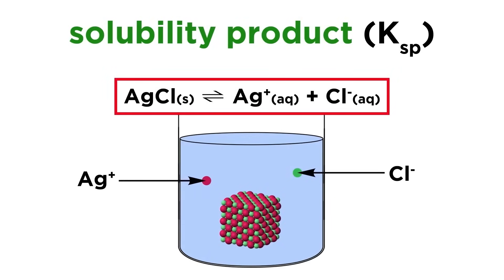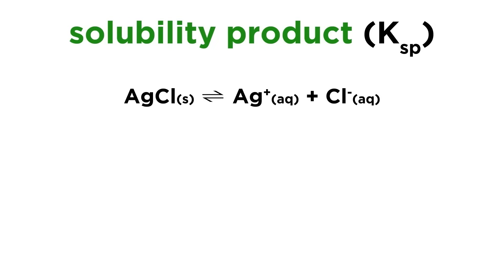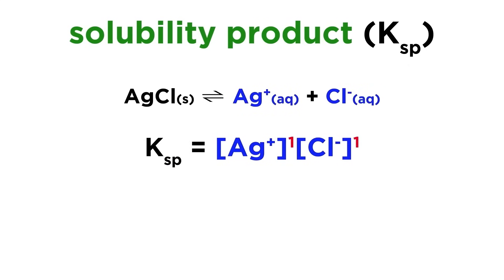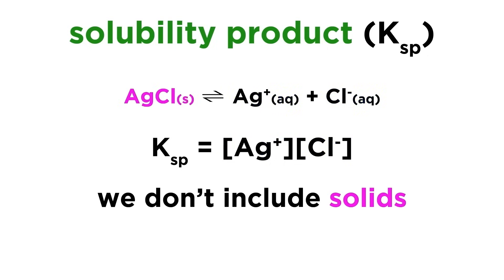Some ions dissolve as other ions rejoin the lattice. Just as with any other type of equilibrium, there must be an equilibrium constant to describe it, and that's the solubility product. As we might guess, this will simply be equal to the product of the two ion concentrations in solution, each raised to the power of their stoichiometric coefficients, which in this case is simply 1 and 1. Notice that we do not include the solid itself in this expression, as we do not include solids in equilibrium expressions.